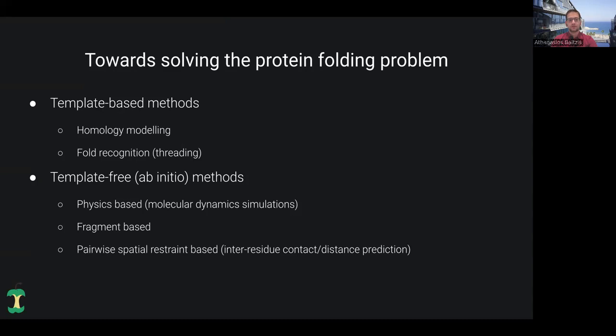On the other hand, we have template-free or ab initio methods. We have a lot of subcategories, for example, molecular dynamic simulations, where we try to use physics laws to find the conformation with the lowest Gibbs free energy. Fragment-based approaches, such as Rosetta. And lately, pairwise spatial restraint-based approaches, where you use techniques to predict the inter-residue contacts or distances in the query protein, and then use them as restraints in simulations in order to get the final predicted model.